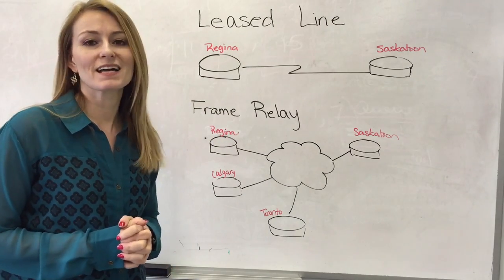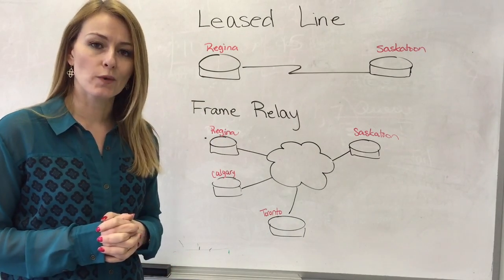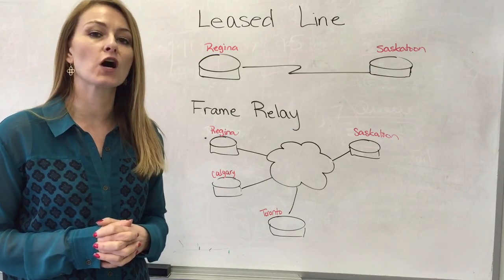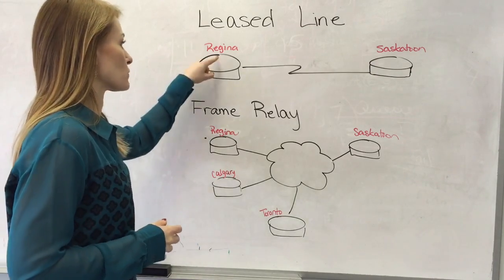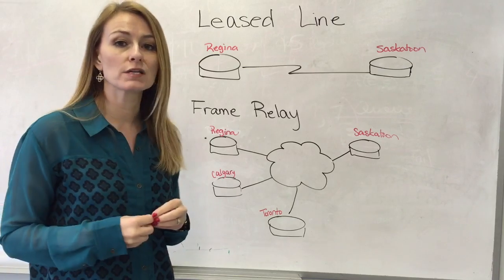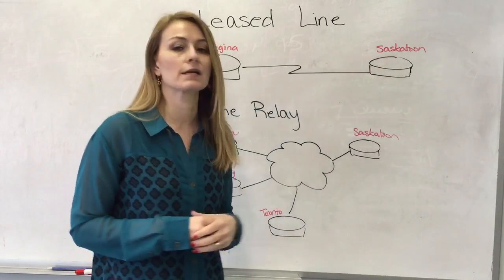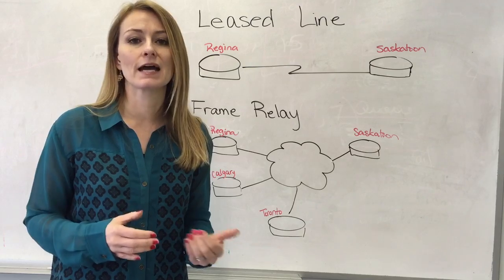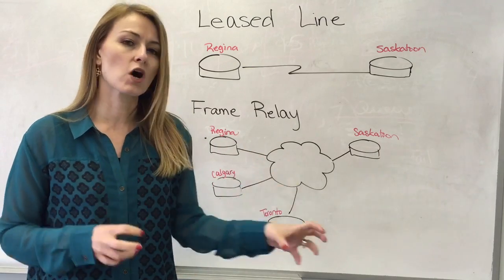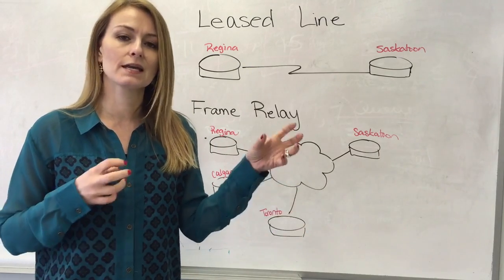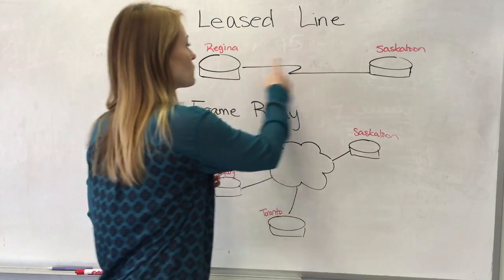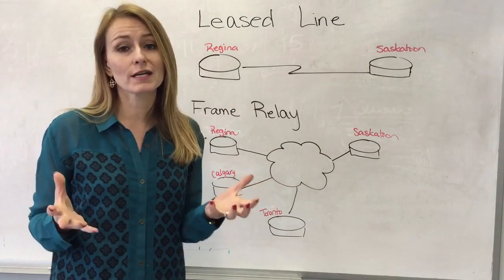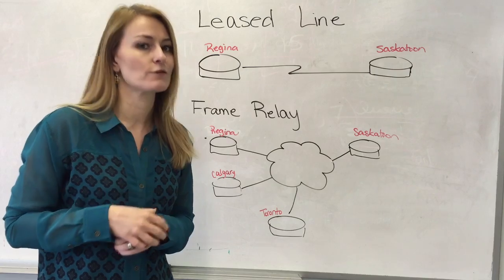Hi. Lease lines are a great way to communicate over long distances. If you've got a local area network in Regina and you need to communicate with the local area network in Saskatoon, you can use a dedicated lease line and you've got this always-on dedicated bandwidth allocated for your communication. Sure, it's great — except it's expensive.